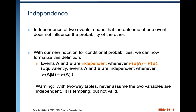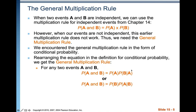With two-way tables, never assume two variables are independent. It's tempting but not valid, so you don't want to use the independence multiplication formula when working with a two-way table. You're going to work with the conditional distribution instead.